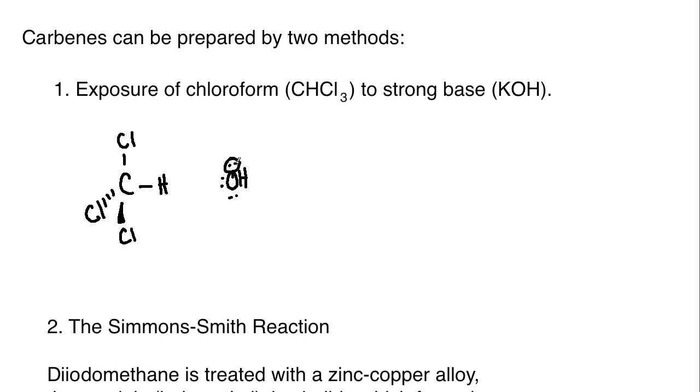If you put chloroform in with a strong base, one of the pairs from that base will go ahead and take this hydrogen, this proton right here, and the electrons will go to the carbon. In that process, you're going to create a pair and the pair will be left with a carbon here. We've got the chlorine here, the pair that's on the carbon now, and then we still have these other two chlorines.